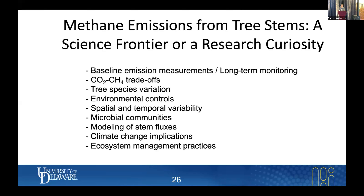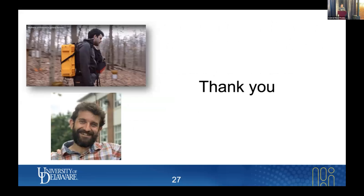We talk a lot about spatial and temporal variability. One thing I didn't talk about was microbial communities — who is living there? Because if methane is produced inside the tree, who is producing it? And then if you can put this together, how are we going to model this? What are the climate implications? And if this is significant, can we use ecosystem management practices to understand how forest practices may influence methane emissions from these surfaces?